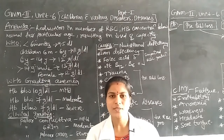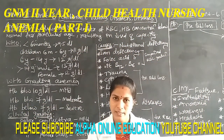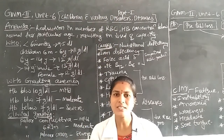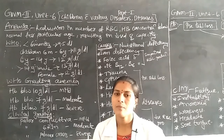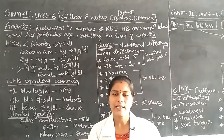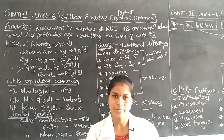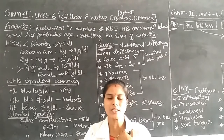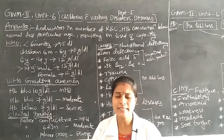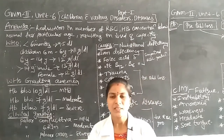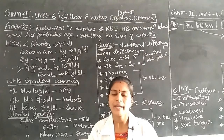For children above 14 years of age, males should have 13 grams per deciliter, and females should have 12 grams per deciliter. These are the percentages given by the WHO. Those children having hemoglobin levels below these values are considered to have anemia. For example, a child below 6 months with only 3.5 grams per deciliter would be diagnosed with the anemia disease condition.